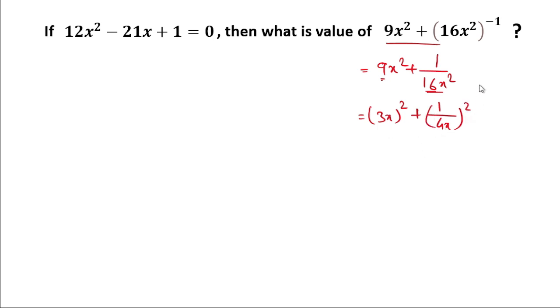The formula for a² + b² is (a + b)² - 2ab. So here we'll apply this formula. We'll write (3x + 1/4x)² minus 2ab.